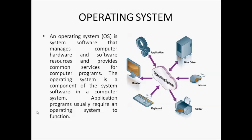Unix is an operating system. What is an operating system? An operating system is itself a software which communicates between the hardware and the applications of the system.